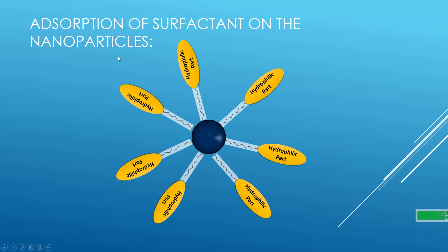Adsorption of surfactant on the surface of nanoparticles. Two mechanisms are proposed for the adsorption of surfactants on the surface of nanoparticles. First, covalent bonding between the surfactants and nanoparticles. And second, electrostatic interactions between the surfactants and nanoparticles.